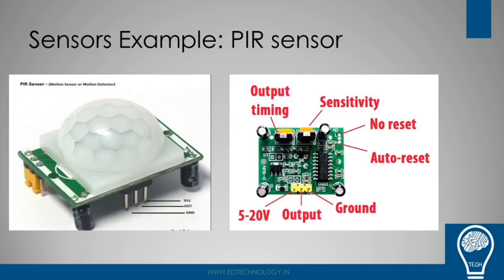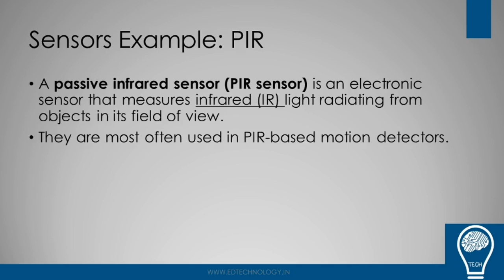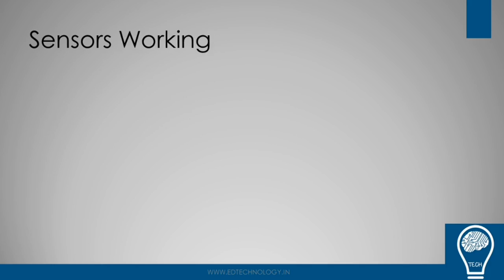Another sensor example is PIR — Passive Infrared Sensor. It is an electronic sensor that measures infrared light to detect an object in its field of view. PIR sensors are widely used in proximity object detection and PIR-based motion detectors. These are the key applications we are talking about.